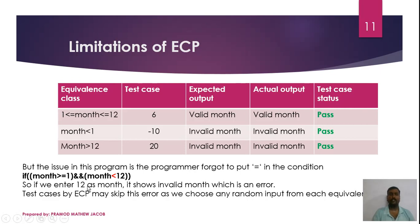So if the programmer has an error in the boundary condition — it should be less than or equal to 12 — and we add the value of 12 to the month, this program has an error and it will show invalid month. Now, actually, 12 for the month is a valid month. If we test these two conditions and add a random value, we will choose that random value. If we choose 12 for the month, we add 12 to the month.